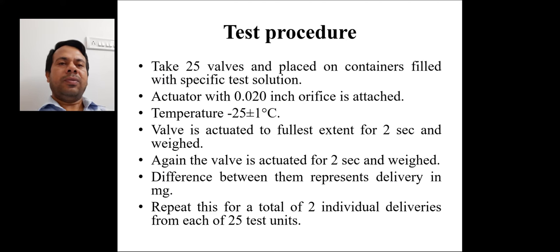Now test procedure. Take 25 valves and place on containers filled with specific test solution. Actuator with 0.02 inch orifice is attached. Temperature of 25 degrees plus minus 1 Celsius is maintained. Valve is actuated to fullest extent for 2 seconds and weighed. Again the valve is actuated for 2 seconds and weighed. Difference between them represents delivery in milligrams. Repeat this for a total of 2 individual deliveries from each of 25 test units.